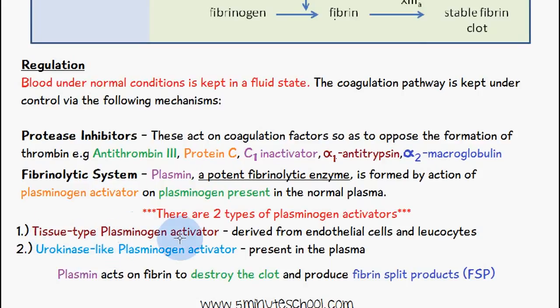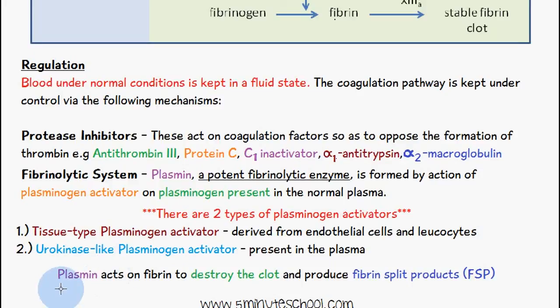The two types of plasminogen activators are: tissue-type plasminogen activator, derived from endothelial cells and leukocytes, and urokinase-like plasminogen activator, present in the plasma itself. Plasmin acts on fibrin, destroys the clot, and produces fibrin split products. That concludes the discussion on the regulation of the coagulation system.